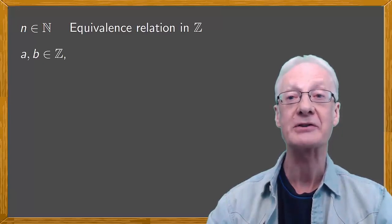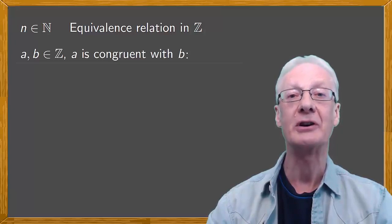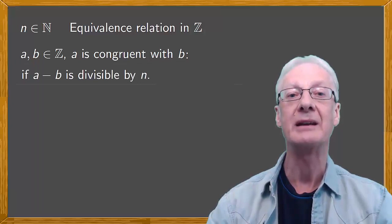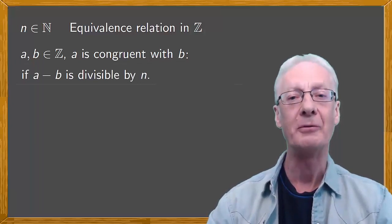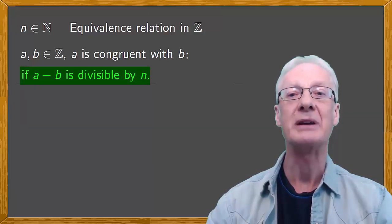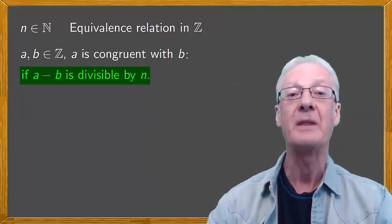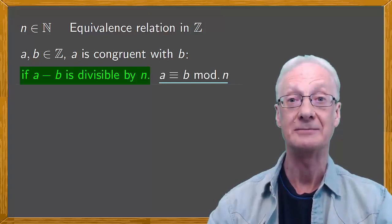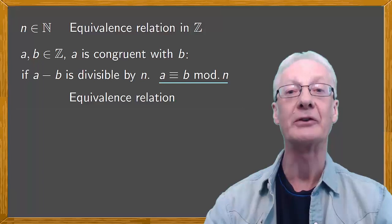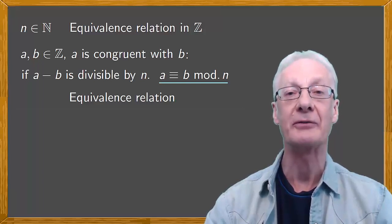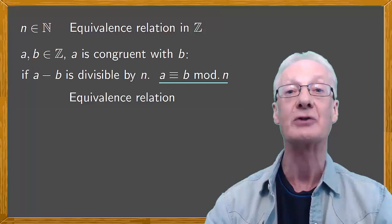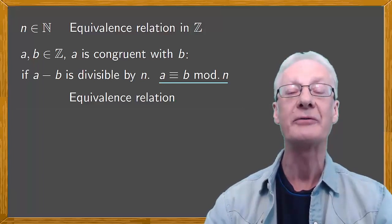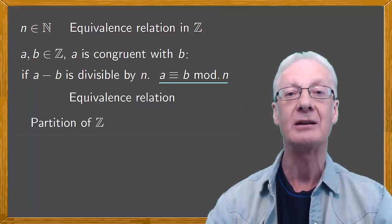If a and b are integers, we might say that in modular arithmetic, a is related to b if a minus b is divisible by n. More formally, we say that if a minus b is divisible by n, then a is congruent with b modulo n. Congruence is an equivalence relation. In other words, it satisfies the reflexive, symmetric, and transitive properties.